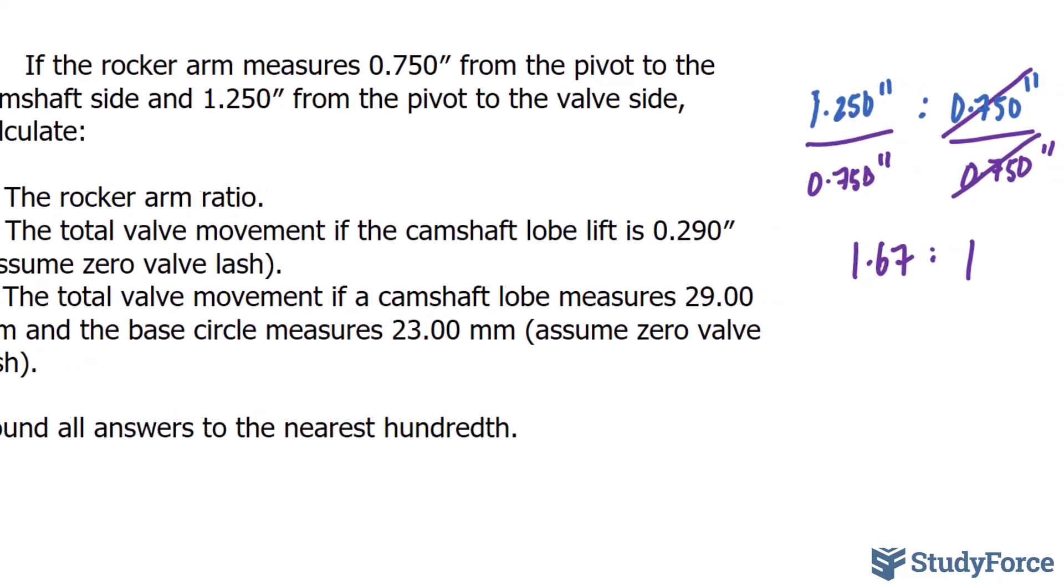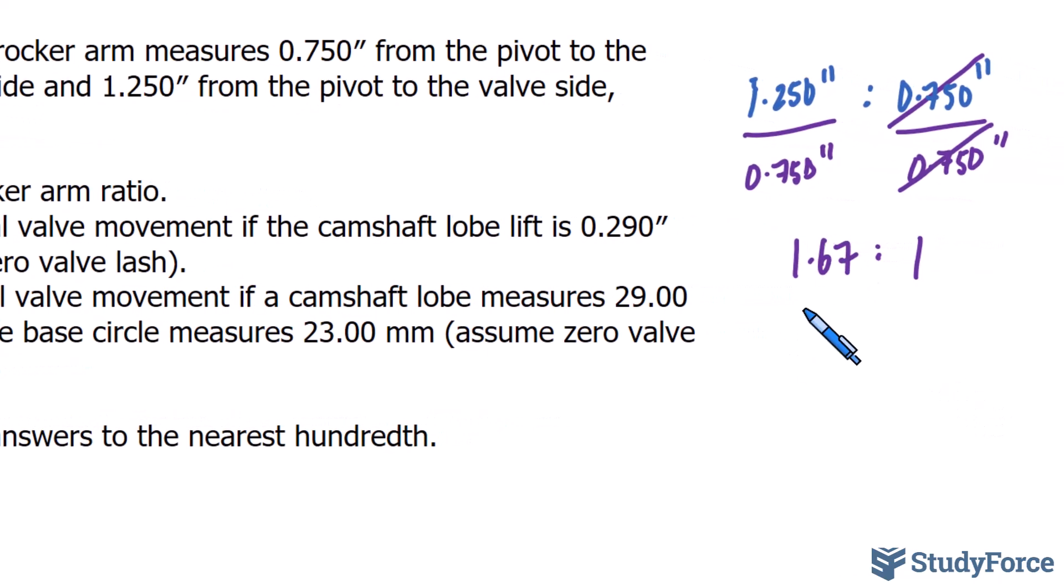What we do to find the total valve movement here is first write the unit ratio you found as a fraction and make it proportional to another fraction. Remember that the top value represented the pivot to the valve side, and the bottom represented the pivot to the camshaft side.